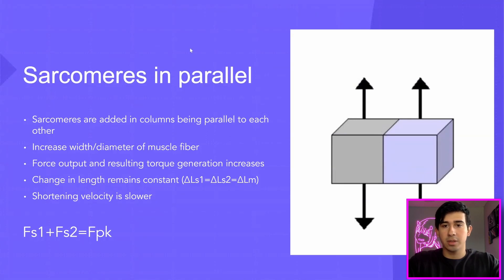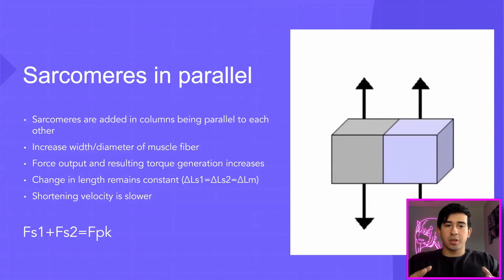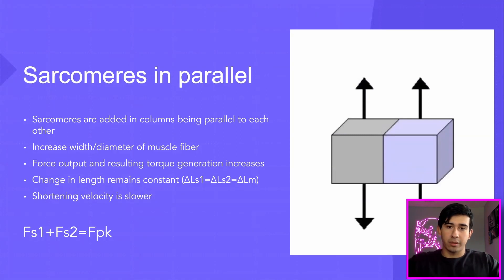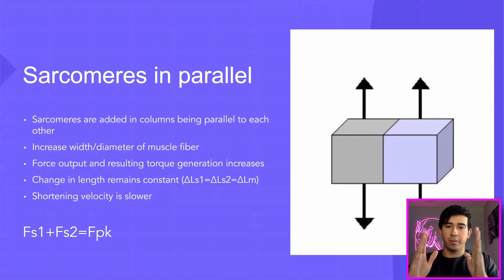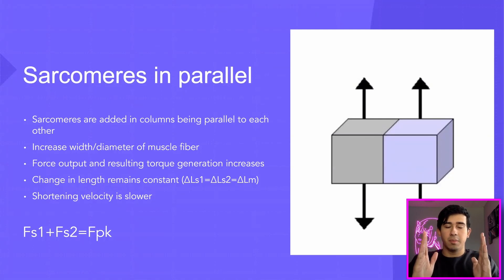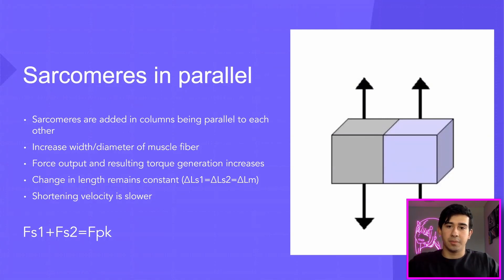Sarcomeres can seem to grow through two different mechanisms: sarcomeres in parallel and sarcomeres in series. Starting with sarcomeres in parallel — sarcomeres are being added in columns that are parallel to each other, basically stacking on one another. From point A to point B, this doesn't necessarily change the length, but rather just increases the width and diameter of the muscle fiber.